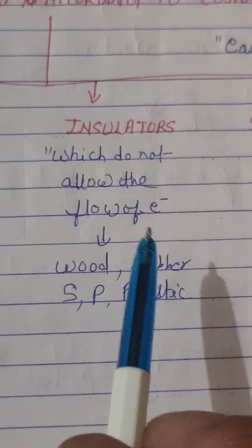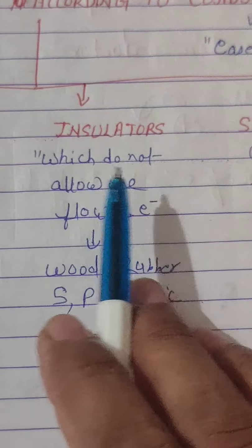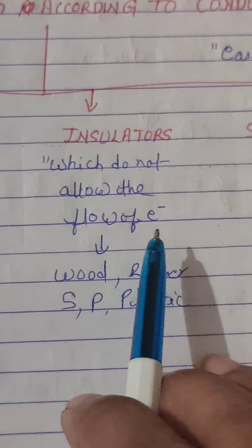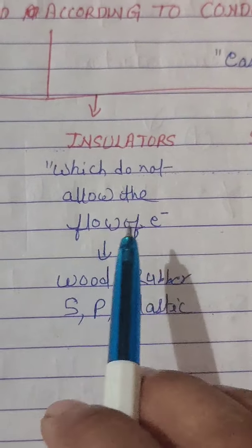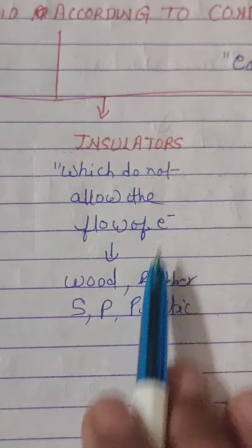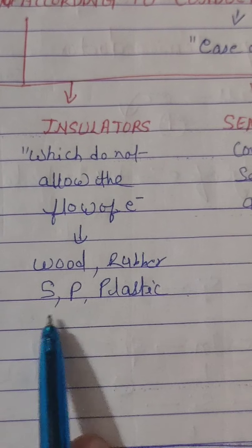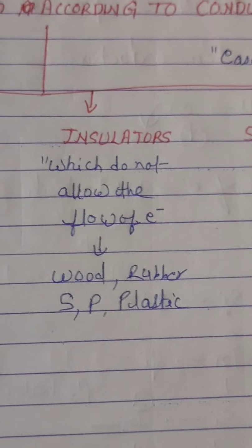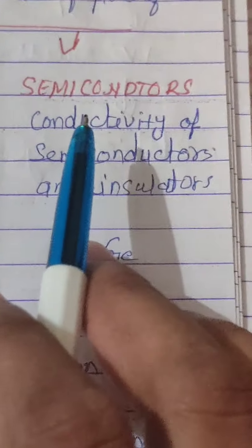Examples of conductors are copper, silver, and iron. Second are insulators. An insulator is a material that does not conduct electricity — current cannot flow through it. Electrons or current cannot flow in insulators. Examples of insulators include wood and rubber.